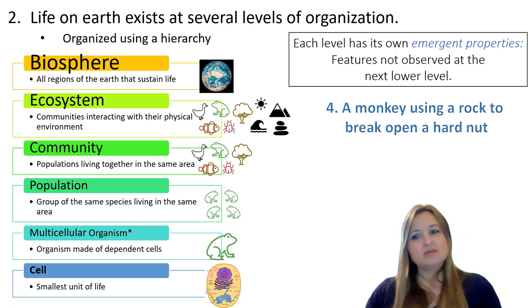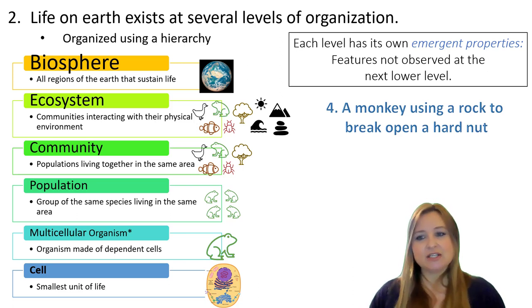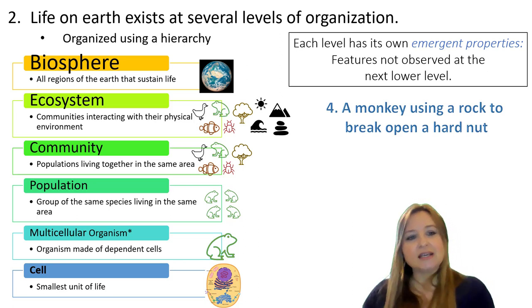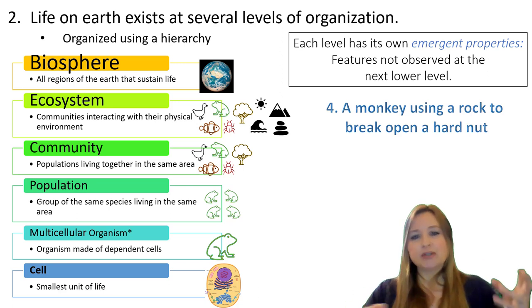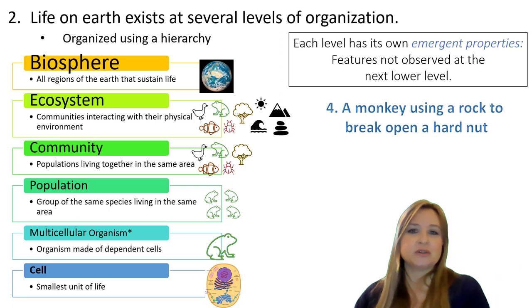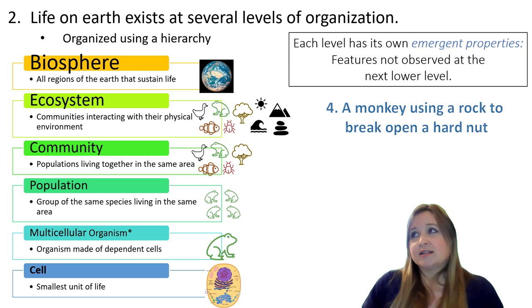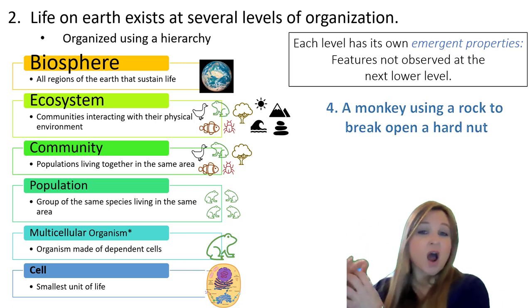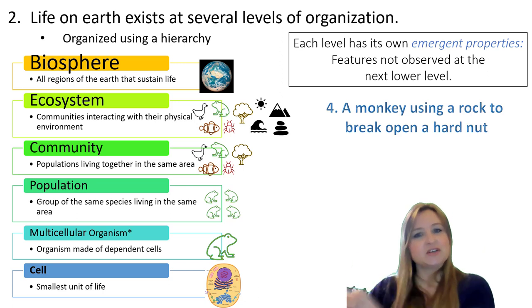A monkey using a rock to break open a hard nut — at what level of the hierarchy would we see this? The monkey is using something that is part of the physical environment — a rock. We can only see the interaction of populations or communities with their non-living environments at the level of an ecosystem. So at the ecosystem level, we can observe the monkey using and interacting with the physical environment. Another emergent property at the ecosystem level might be a sea anemone or barnacle sticking to a rock in the ocean — living things interacting with the physical environment.